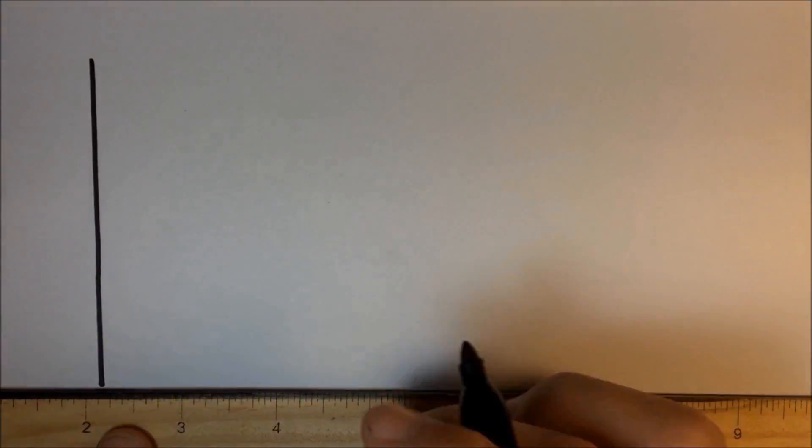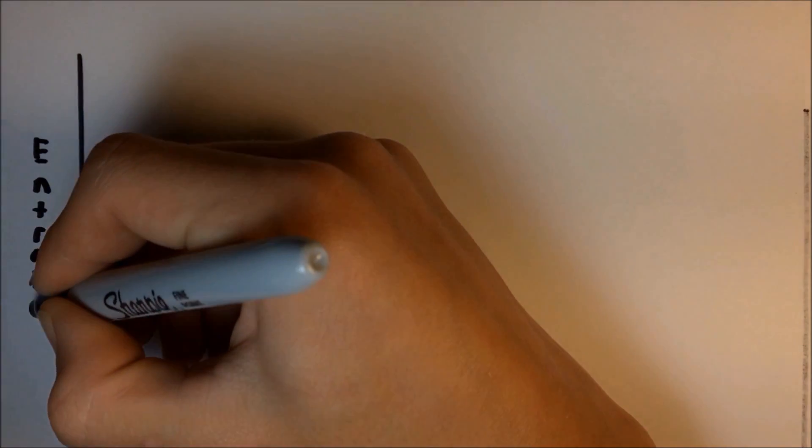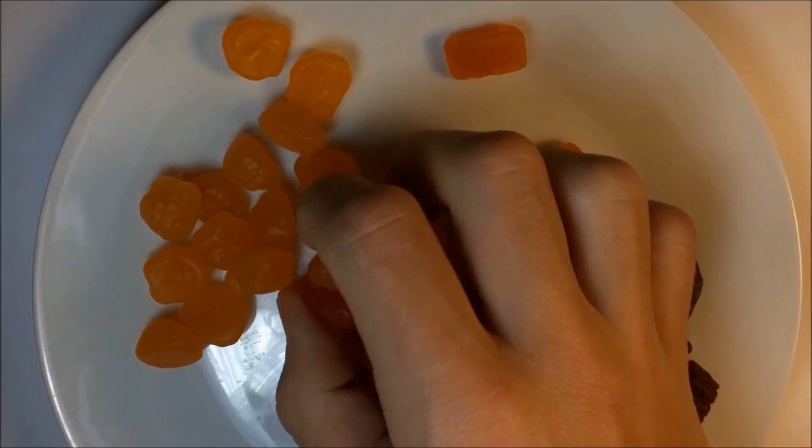The second law of thermodynamics states that in a closed system, chaos and disorder, or entropy, can only go up. For example, if we have an ordered system like this and randomly mess it up, it will become more disordered.